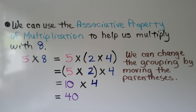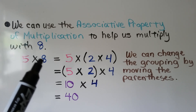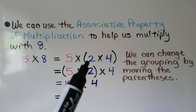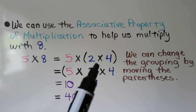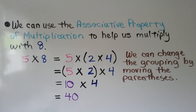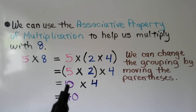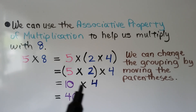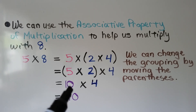We can use the associative property of multiplication to help us multiply with 8. We have 5 times 8. We can break the 8 into a 2 times 4, so then we have 5 times 2 times 4. We can change the grouping by moving the parentheses — we put them around the 5 and the 2. 5 times 2 is equal to 10, and we multiply the 10 times the 4, which equals 40. It's a lot easier to multiply by 10.